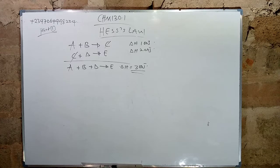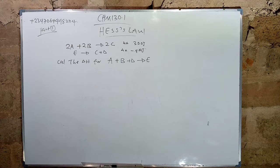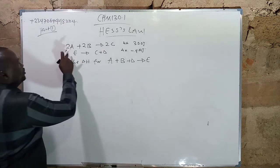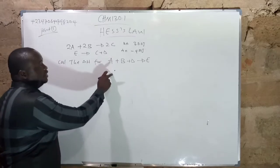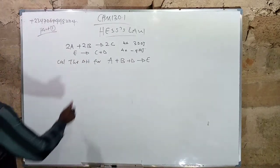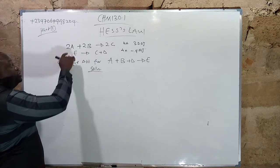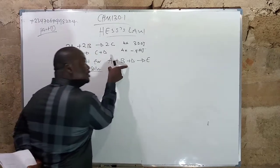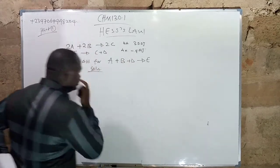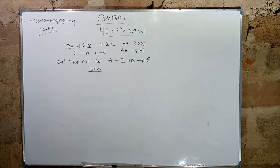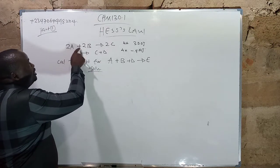Now let's look at a worked example. We have equation one, equation two, and the question asks: calculate the delta H for equation three, which is A + B + D giving E. To solve this, we need to adjust equations one and two in such a way that when we add them we get equation three. The guideline is to focus on letters found in equation one and two but not in both.